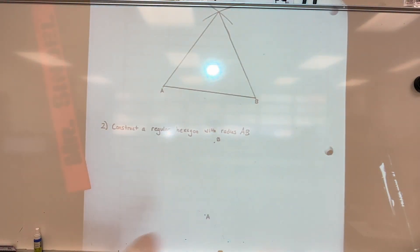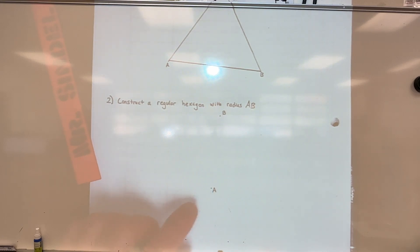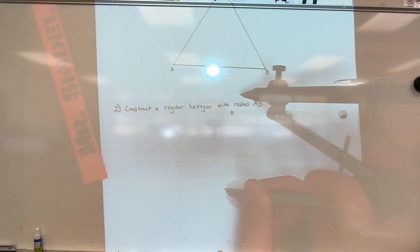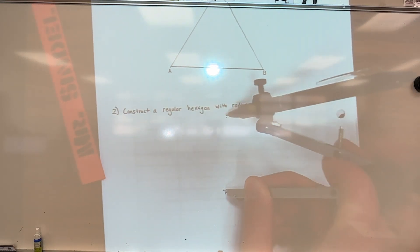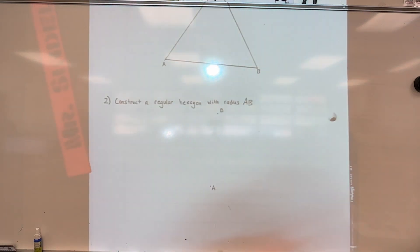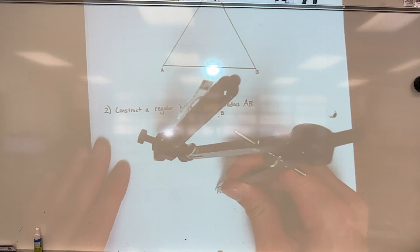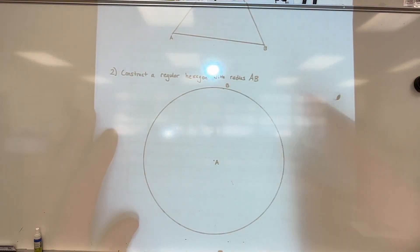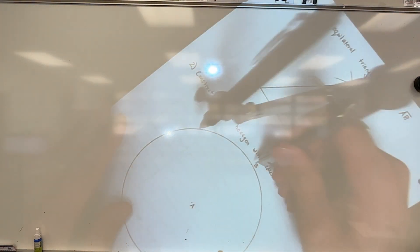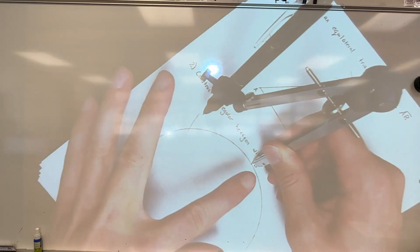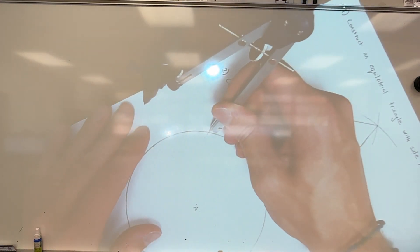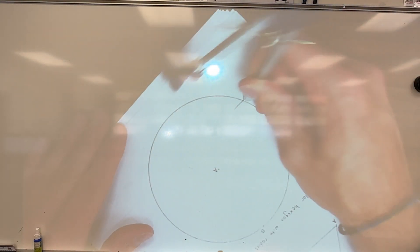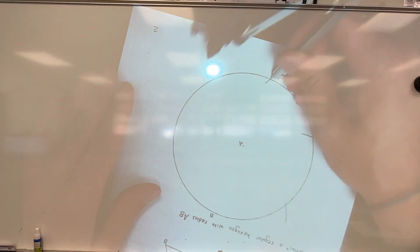Number two: a regular hexagon with radius AB. Set the compass from A to B, then draw a full circle. Starting from B, mark out equal segments using that same radius length — moving the tip to each new intersection and continuing around. You'll end up right back where you started with six equally spaced points.